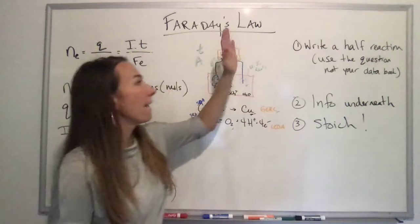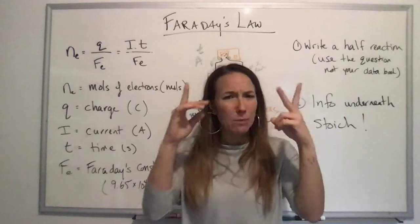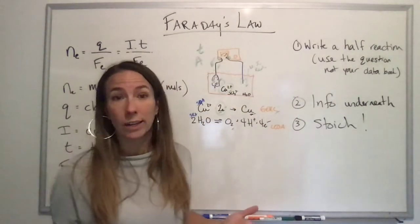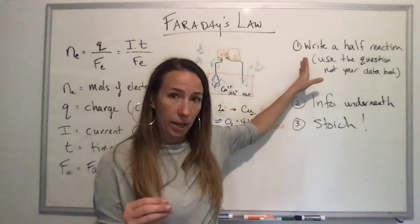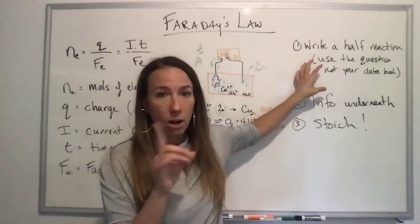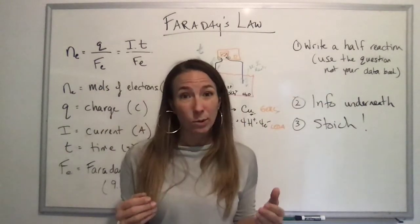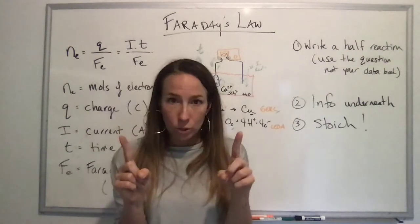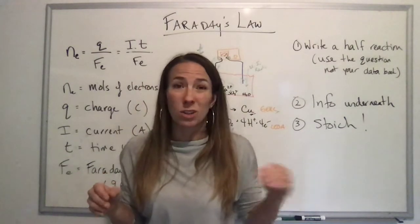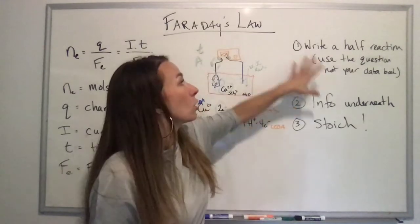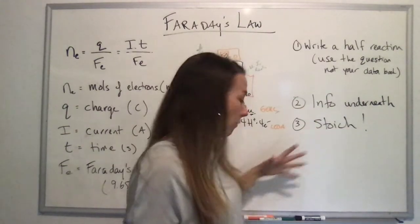In order to use those formulas, we're gonna have to do some stoichiometry here. And with stoichiometry we always write a balanced chemical reaction. But for some reason when students are doing Faraday's law they stop writing this balanced chemical reaction. Don't do that, you still have to write a half reaction. You're gonna use the question, not use your data booklet, because sometimes it tells you something different. Don't use your data booklet, use the question only. So you're going to write the half reaction, then you're going to put your info underneath, and then you're going to do some stoic.